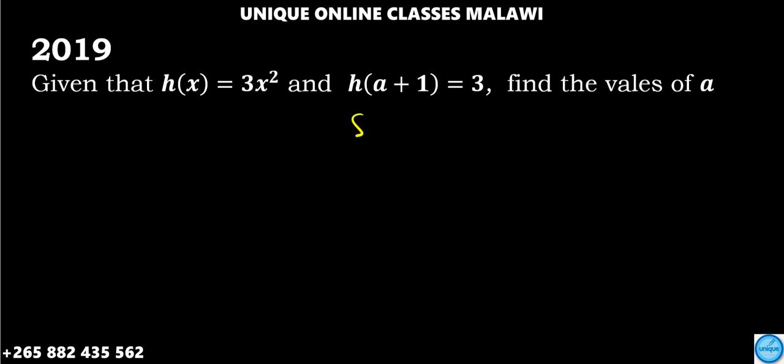Let's have the solution here. So h of x is equal to 3x squared, and h of a plus 1 is 3.